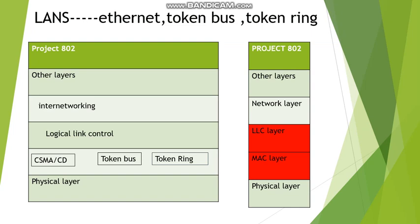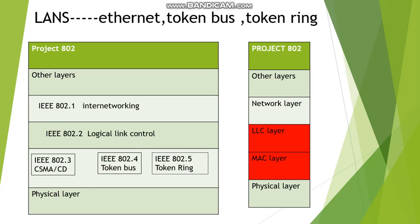The strength of Project 802 is modularity — it subdivides the functions necessary for LAN management, and each subdivision is identified by a number. IEEE 802.1 is for internetworking, IEEE 802.2 is for logical link control, IEEE 802.3 is for CSMA/CD (Ethernet), IEEE 802.4 is for token bus, and IEEE 802.5 is for token ring.